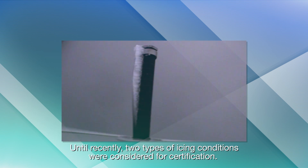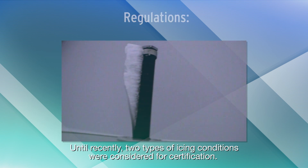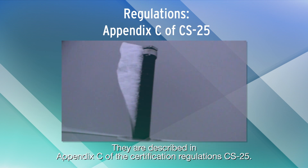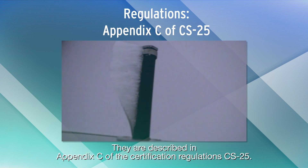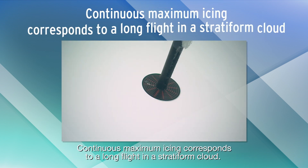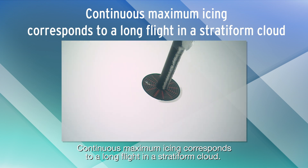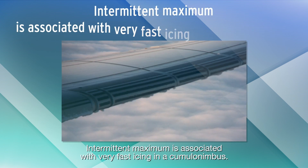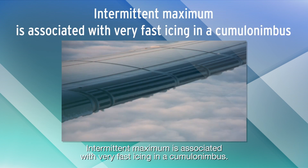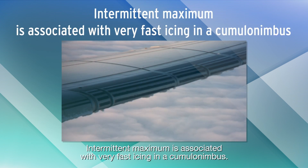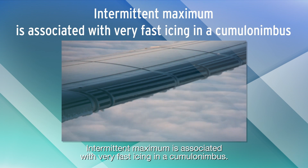Until recently, two types of icing conditions were considered for certification. They are described in Appendix C of the Certification Regulations CS25. Continuous maximum icing corresponds to a long flight in a stratiform cloud. Intermittent maximum is associated with very fast icing in a cumulonimbus.